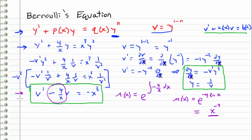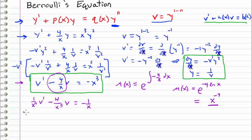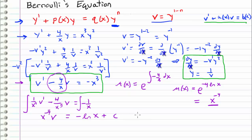Multiplying through the differential equation by our integrating factor x to the negative fourth, we get: (1/x⁴)·v prime minus 4/x⁵·v equals negative 1/x. Integrating both sides with respect to x, the left-hand side becomes the integrating factor times v, and the right-hand side integrates to negative ln(x), plus a constant of integration. So we have x to the negative fourth times v equals negative ln(x) plus C.